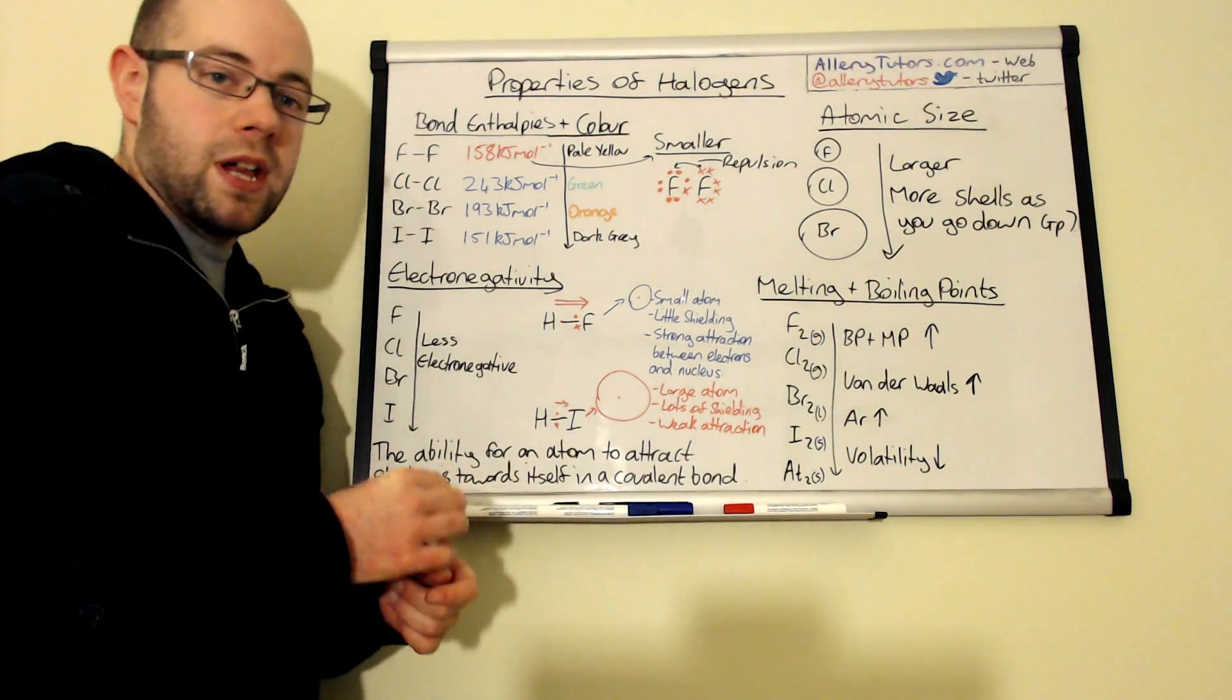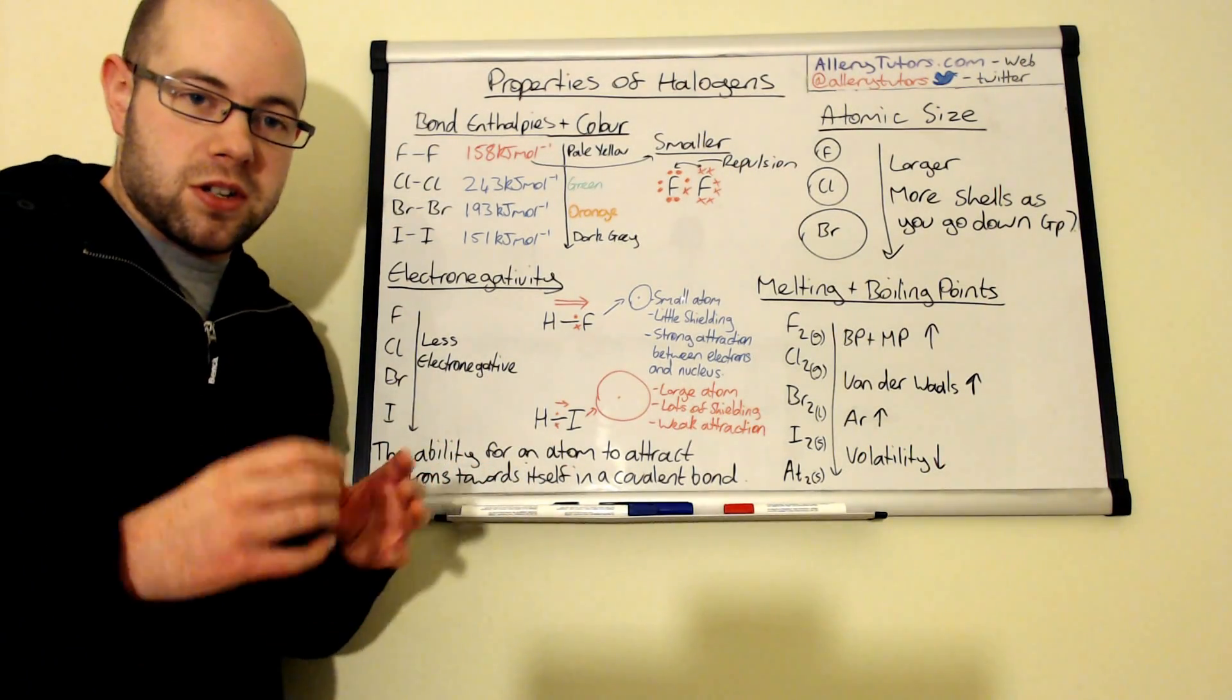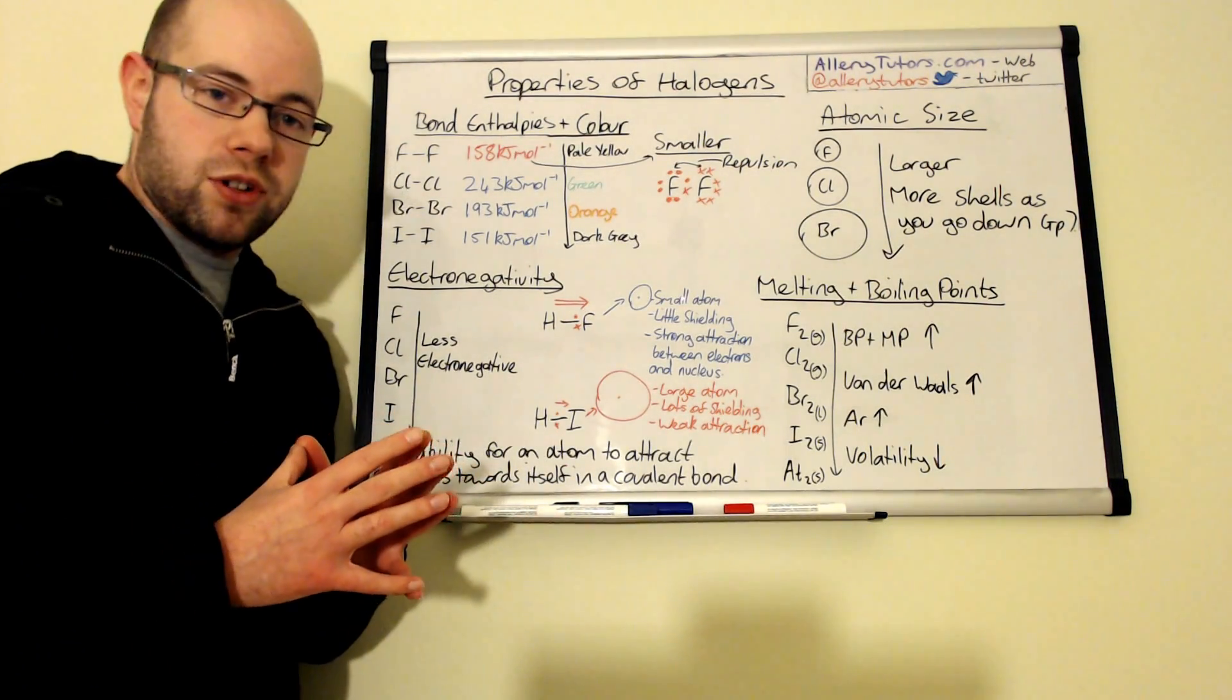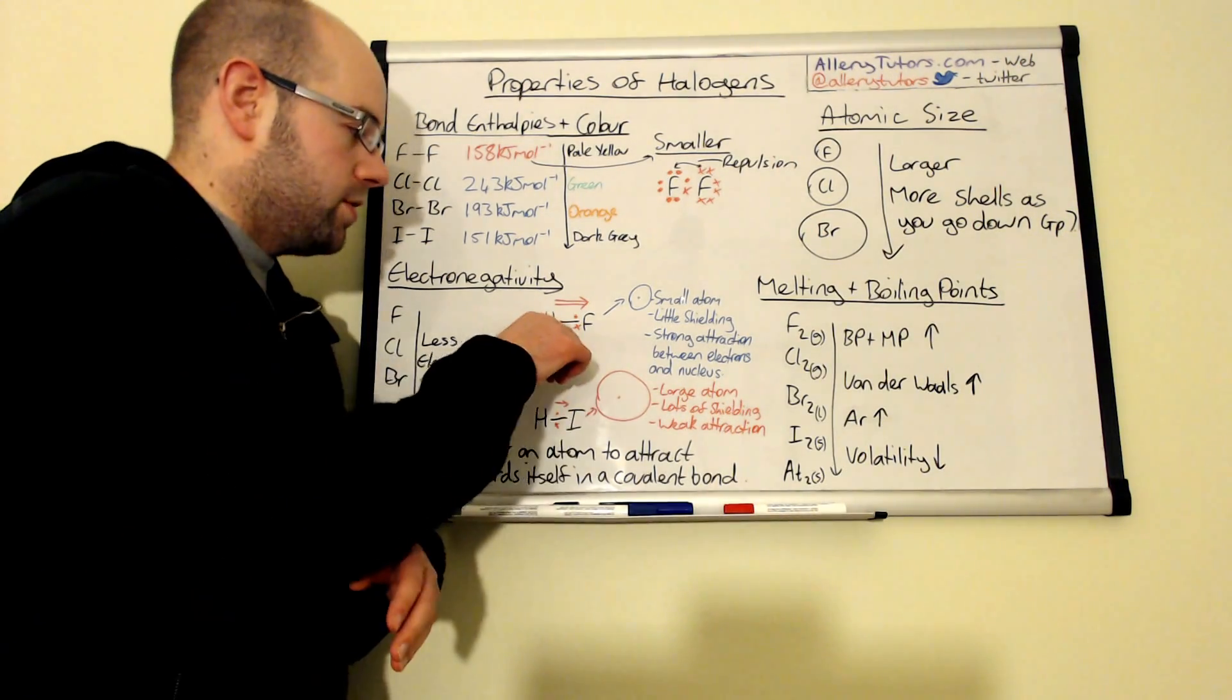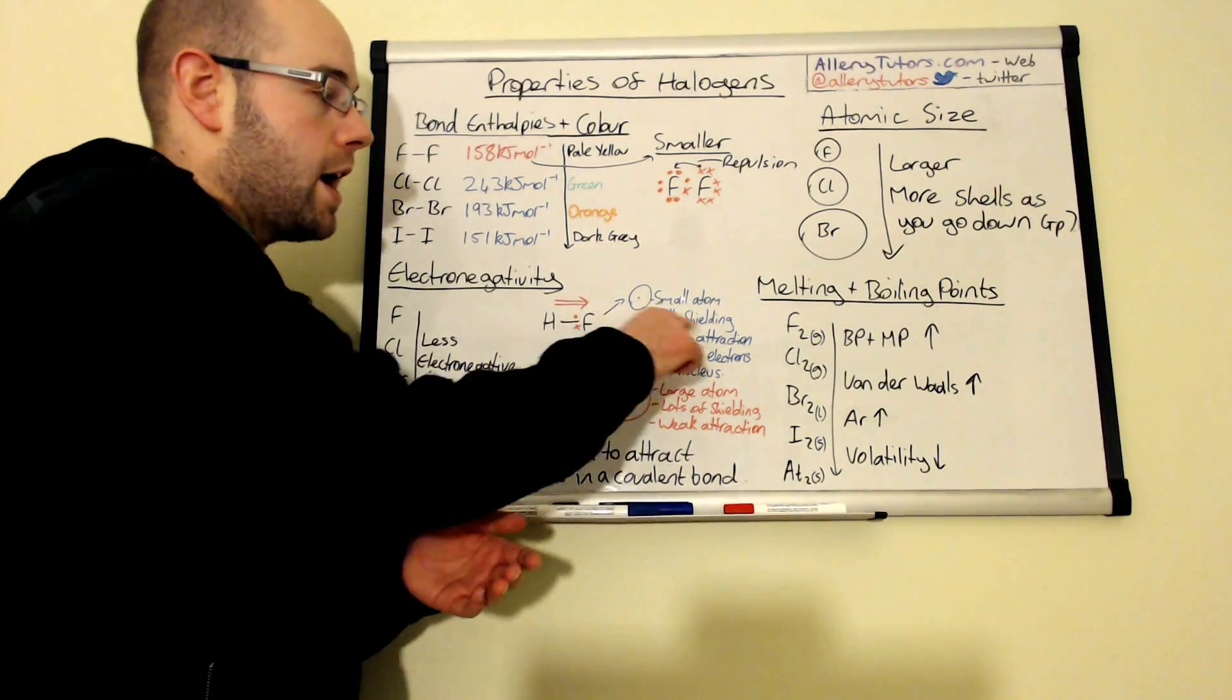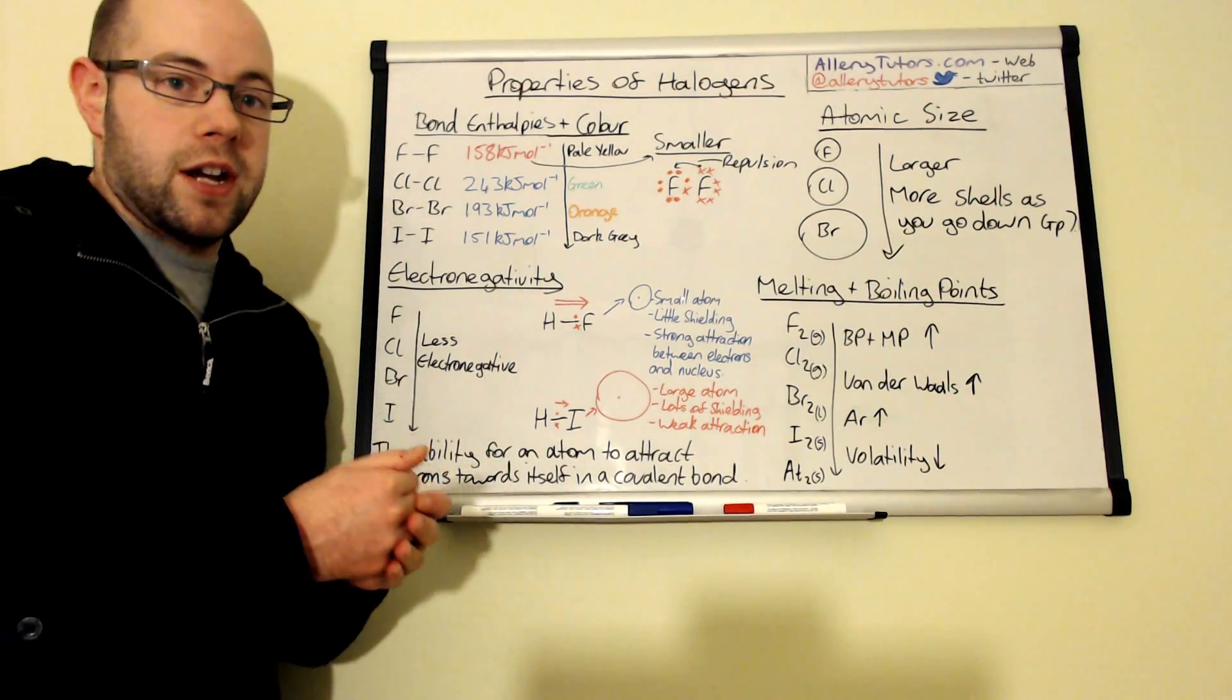Now the reason why it links in with atomic size actually up here. So fluorine is a small atom as we've seen up there and it doesn't have much shielding which means it doesn't have many electron shells between the nucleus and the shared pair of electrons in the bond and that means it's got a strong attraction between the shared pair of electrons and the nucleus.